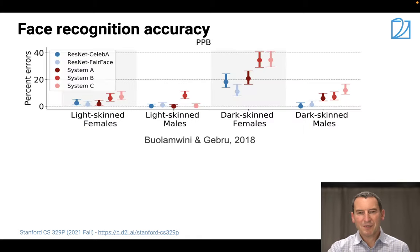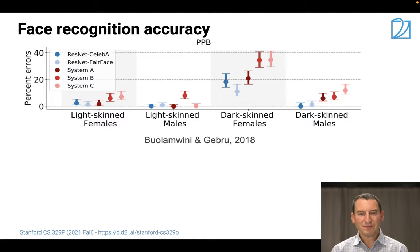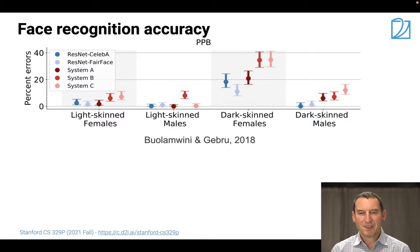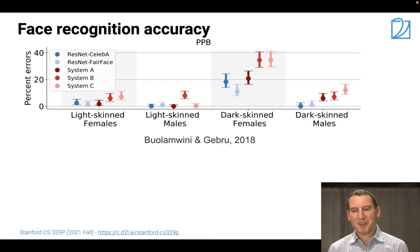Back to face recognition accuracy - what they found looked pretty alarming. They compared three commercial systems A, B, and C, looking at errors on CelebA, ResNet, and FairFace. What they found is that dark-skinned men, and especially dark-skinned women, have a much higher error rate. For gender classification, if you just look at it as-is, you'd say the system isn't working well for dark-skinned women - there's some racial bias.